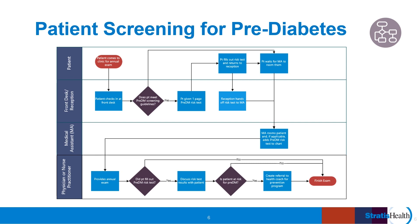The process starts in the upper left with the circle indicating the patient comes into the clinic for the exam. We follow the patient on their journey through the clinic where they interact with each of the roles in the lanes, and see that there are several decisions or questions represented in diamonds that need to be answered, directing the patient through a different set of steps depending on the yes or no answers. The process is completed at the bottom right where the circle indicates the exam or encounter is complete and the patient leaves the clinic. The process map helps us understand which roles are responsible for particular steps related to the prediabetes screening, and you can visualize the handoffs occurring between people and departments.